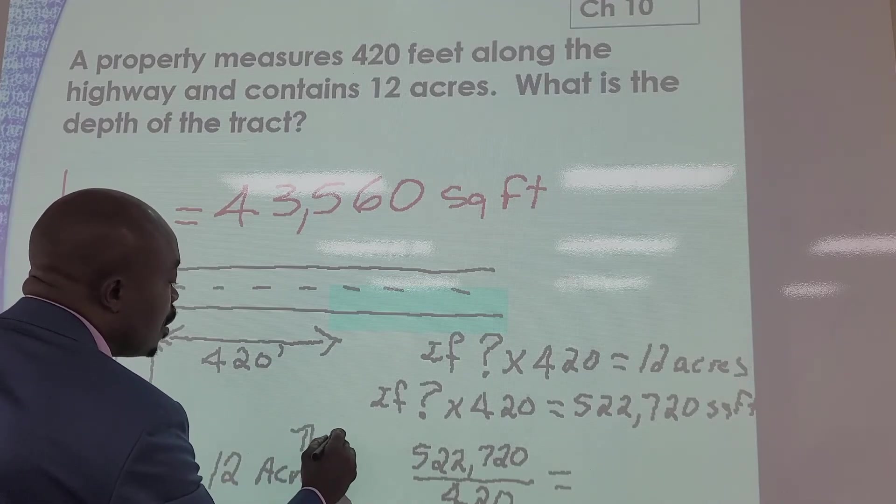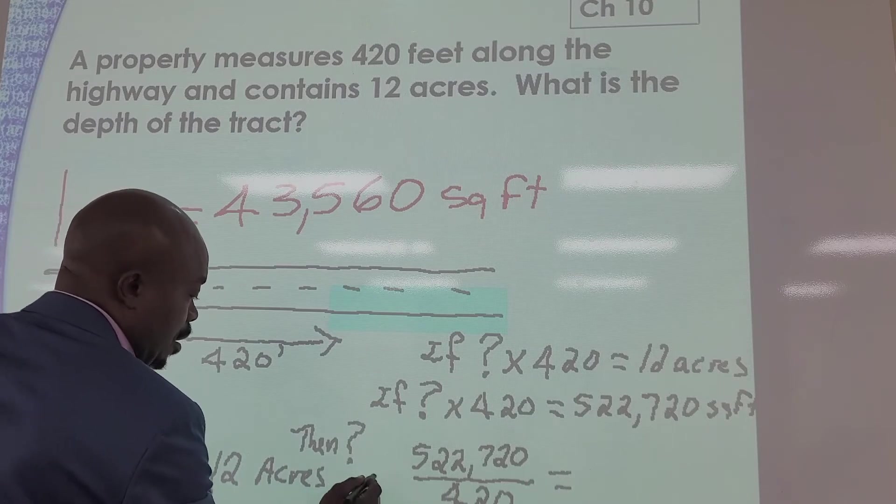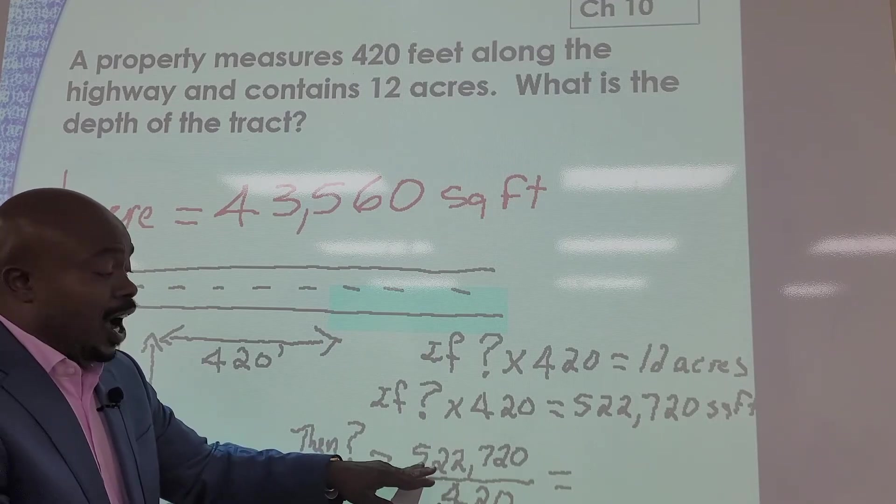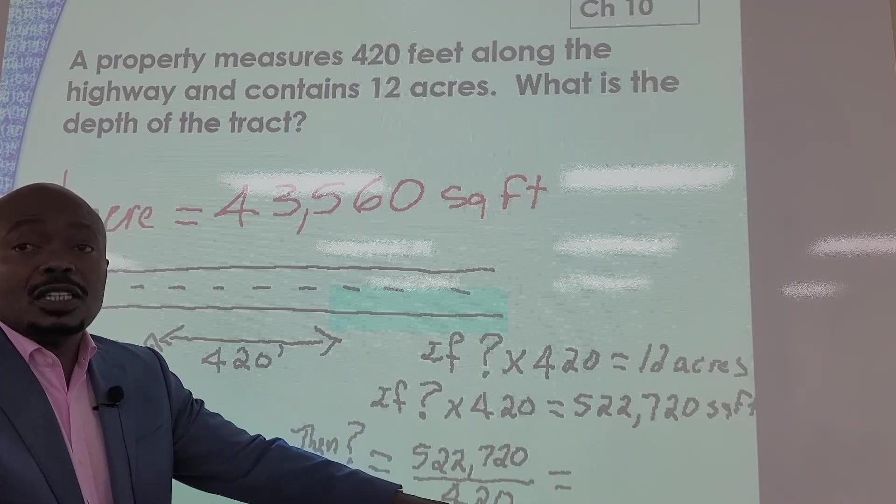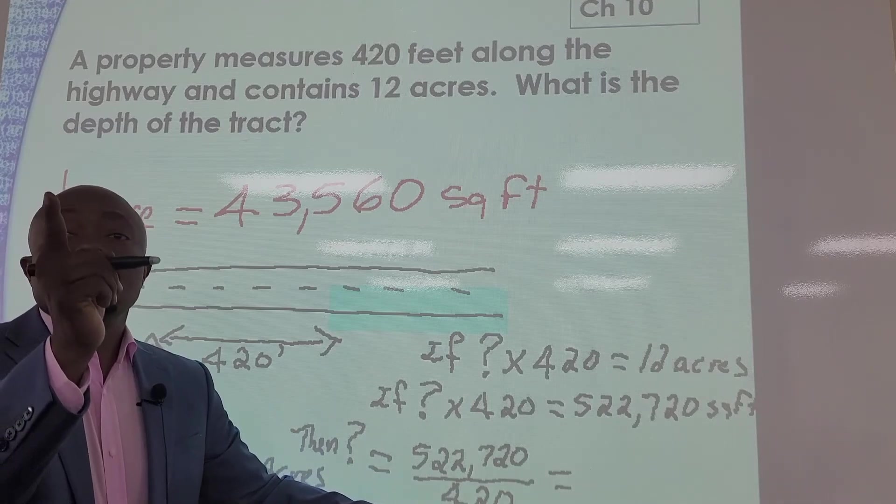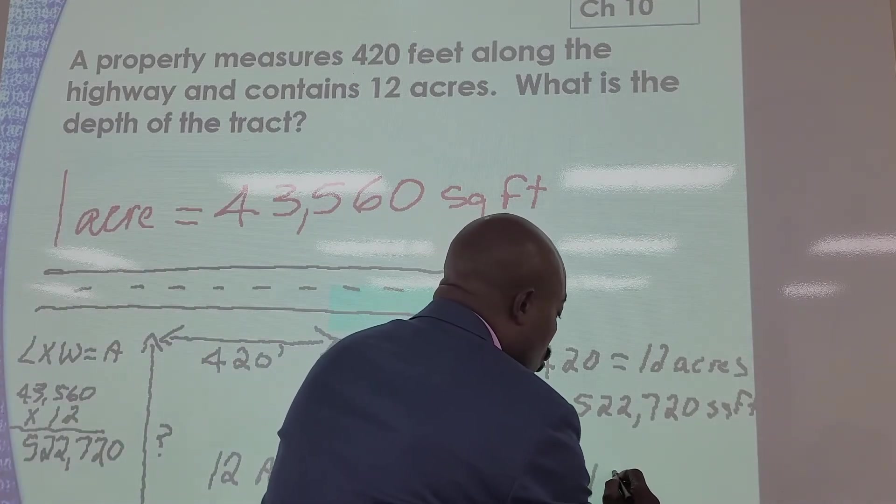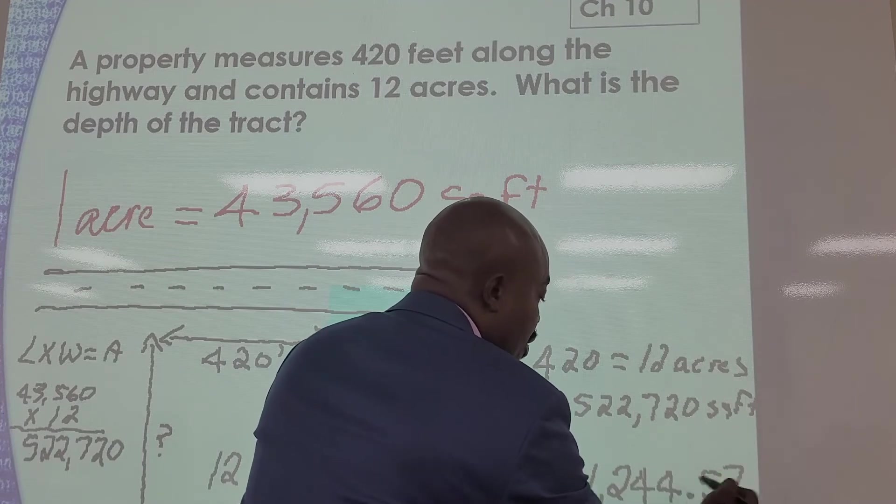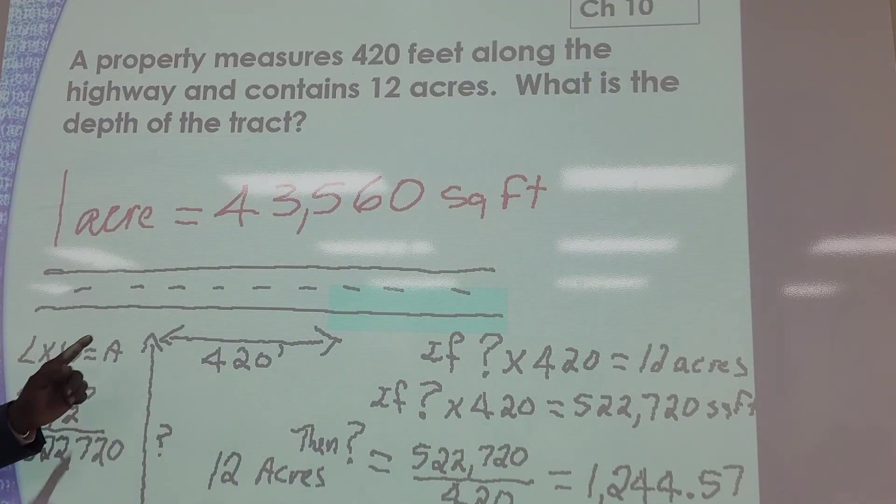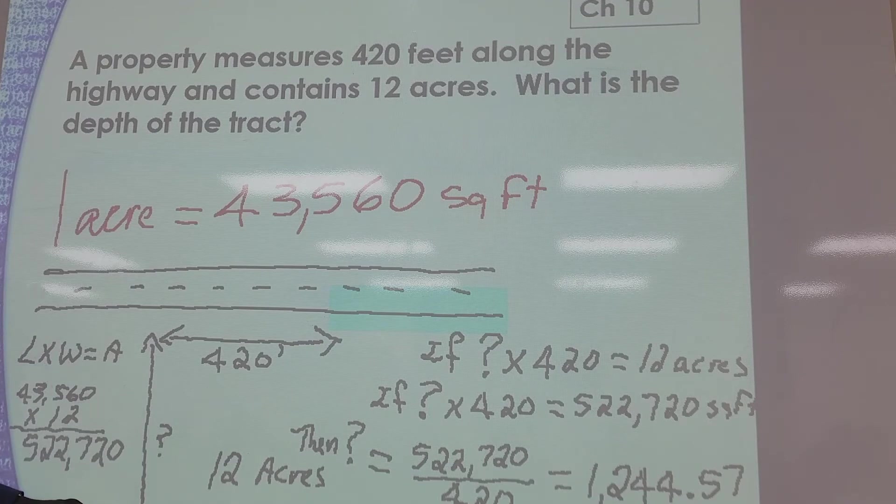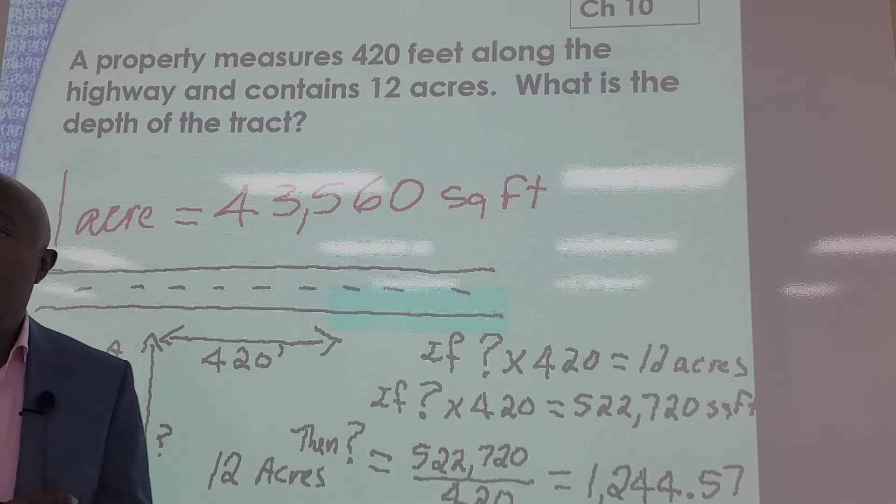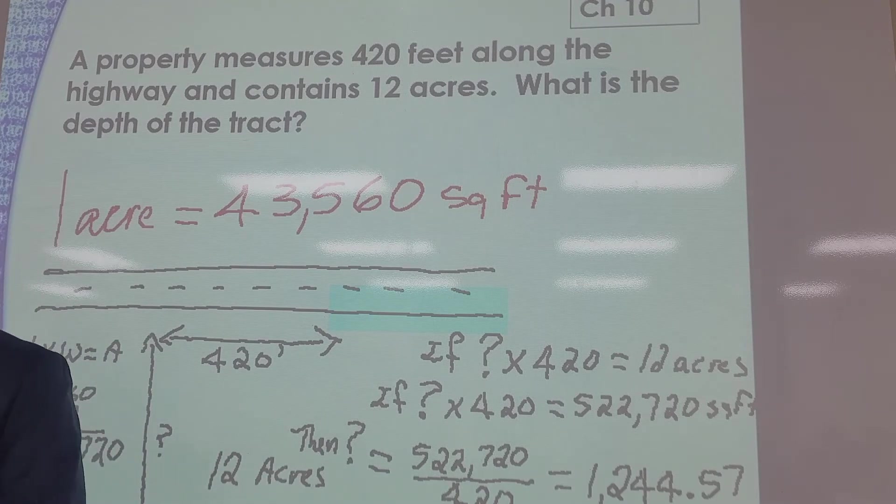Then this would equal 522,720 divided by 420. What's the answer? 1,244.57. So that's how deep that has to be, understood? So now we know this, the length must be 1,244.57 feet. Got it?